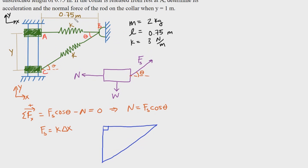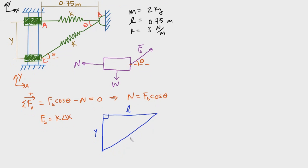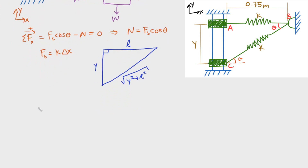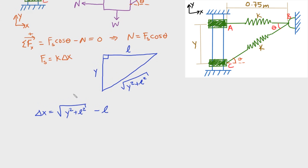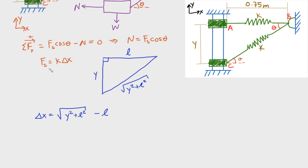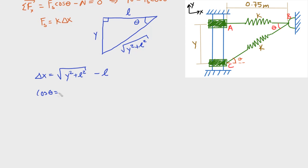Using the Pythagorean theorem, the hypotenuse is √(y² + l²). The change in spring length — that is, how much the spring has stretched — is √(y² + l²) − l. Now for cosθ: the angle θ is between the hypotenuse and side l, so cosθ = l / √(y² + l²), which is adjacent over hypotenuse.